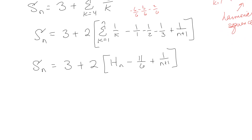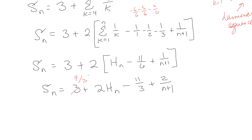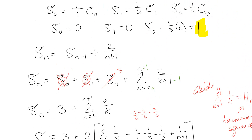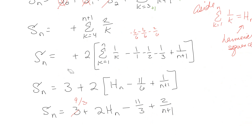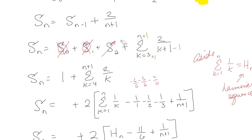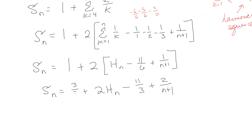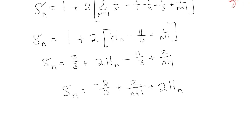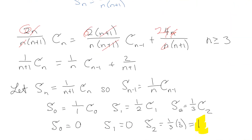After adjusting the summation limits and combining the constants — 1 + 1/2 + 1/3 = 11/6 — plus the 2/(n + 1) term, I get: s(n) = 2·H(n) − 11/6 + 2/(n + 1), where H(n) is the harmonic number. Wait, let me correct that — those terms should be ones giving three-thirds, so I have s(n) = 2·H(n) − 8/3 + 2/(n + 1).